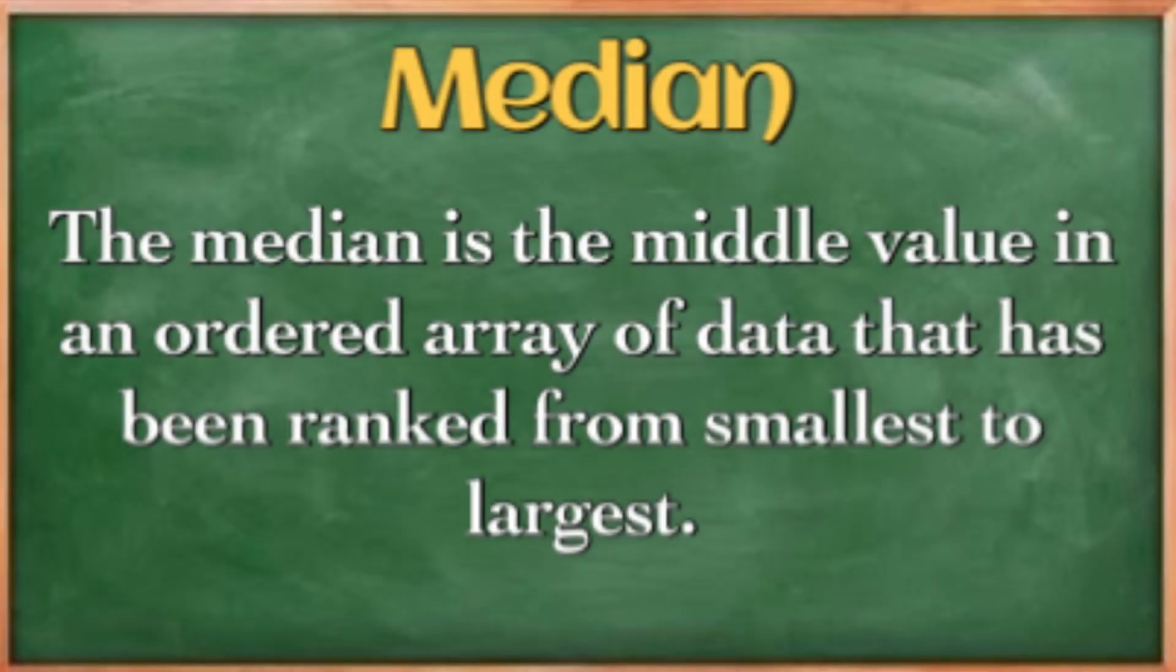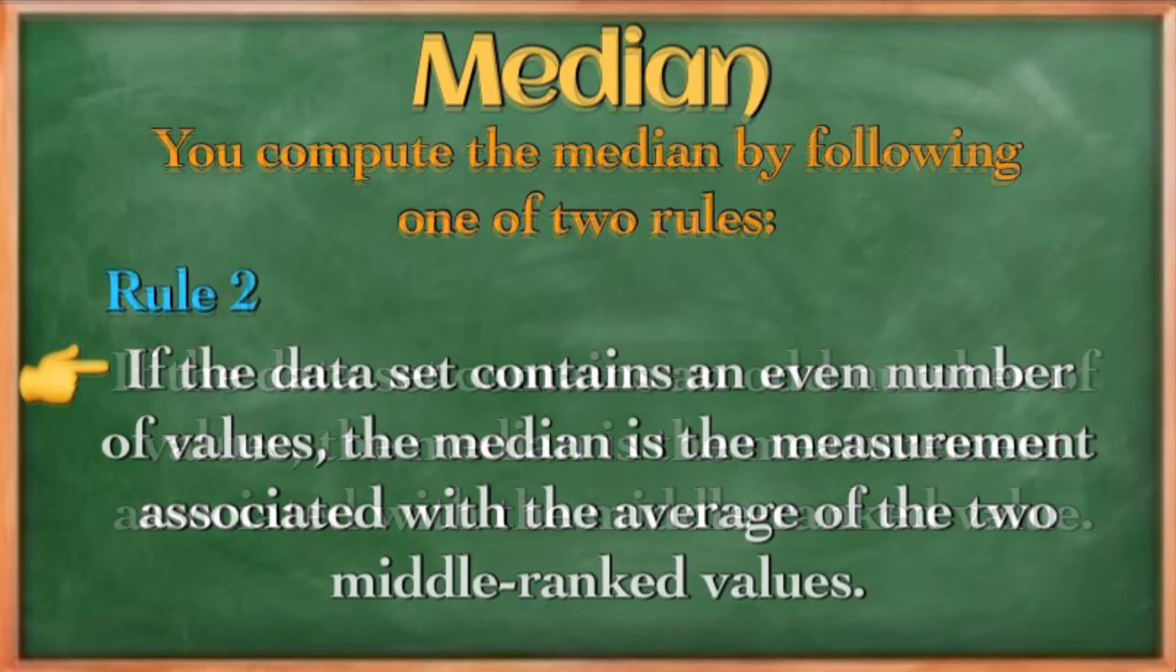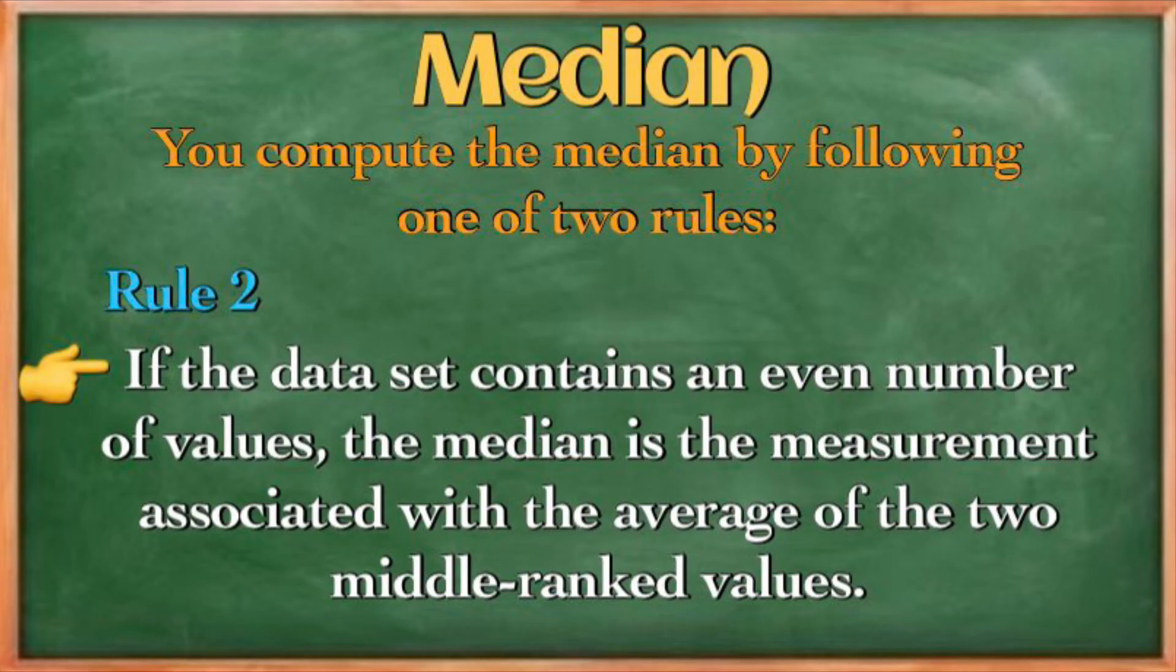The next measure of central tendency is the median. Median is the middle value in an ordered array of data that has been ranked from smallest to largest. To compute for the median, we will follow these two rules: Rule number one—if the data set contains an odd number of values, the median is the measurement associated with the middle ranked value. And rule number two—if the data set contains an even number of values, the median is the measurement associated with the average of the two middle ranked values.